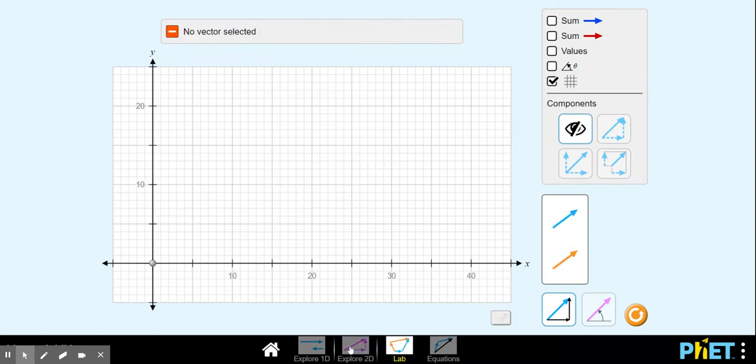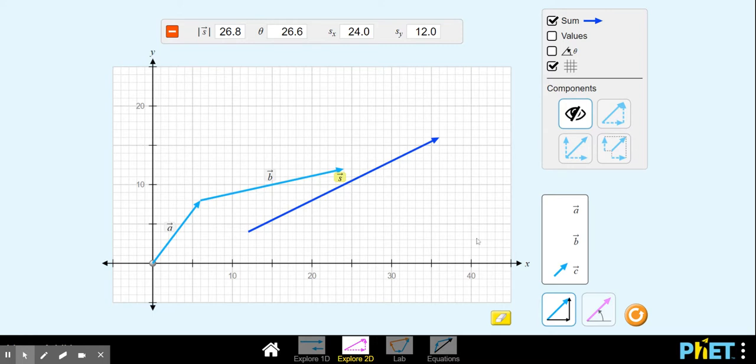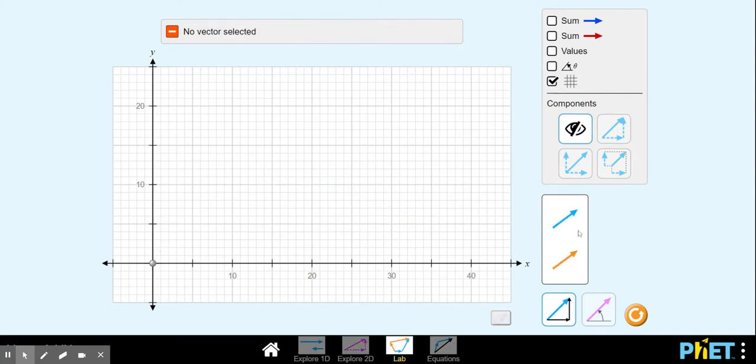And then the lab piece, if we click back and forth between 2D and lab, you can see that lab gives you a choice of two different colors of vectors, blue or orange. I'm not really sure why. But Explore2D only gives you three vectors to work with, a, b, and c. You can't add another. The lab, you can drop in as many vectors as you like. So if you want to make a chain of more than three, then you want to be using the lab instead of the Explore2D feature.